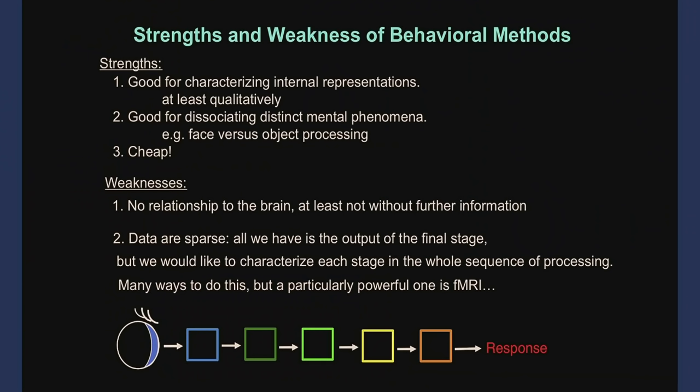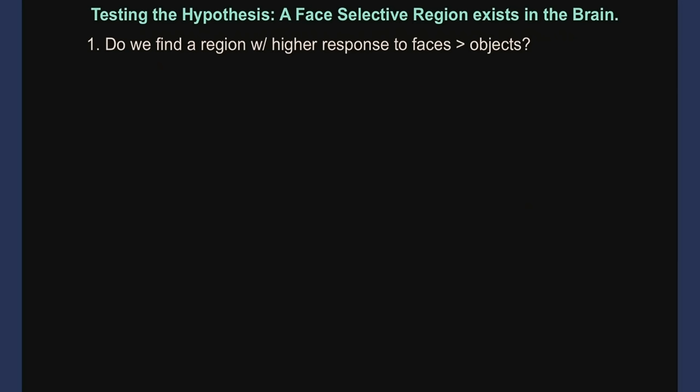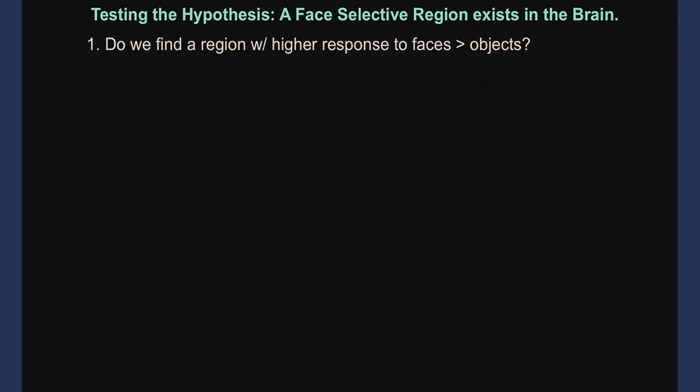A particularly good way to do that is functional MRI. I mentioned this very briefly before — this very early experiment asking whether there is a region of the brain that's selectively involved in processing faces. I want to emphasize more the logic of the experimental design, because you guys will be designing an experiment on a different topic due Monday night. We start with a hypothesis that there's a region of the brain that's selectively responsive to faces. The way we test it is to put people in a scanner and show them faces and objects.